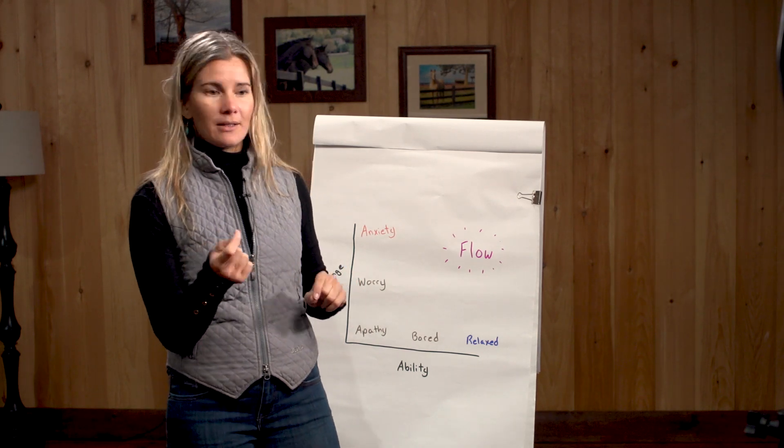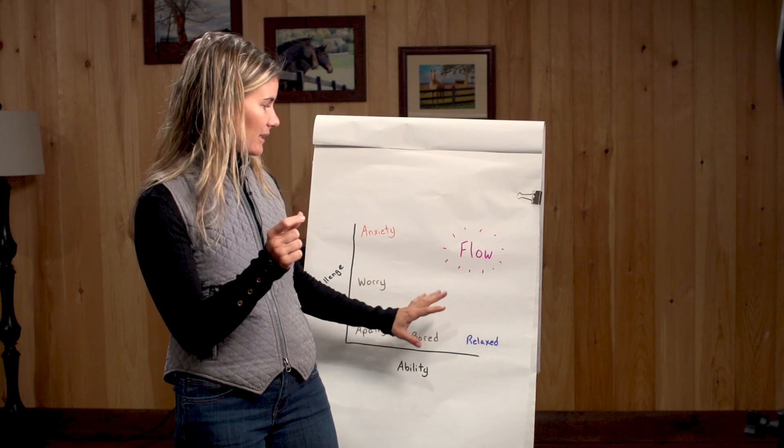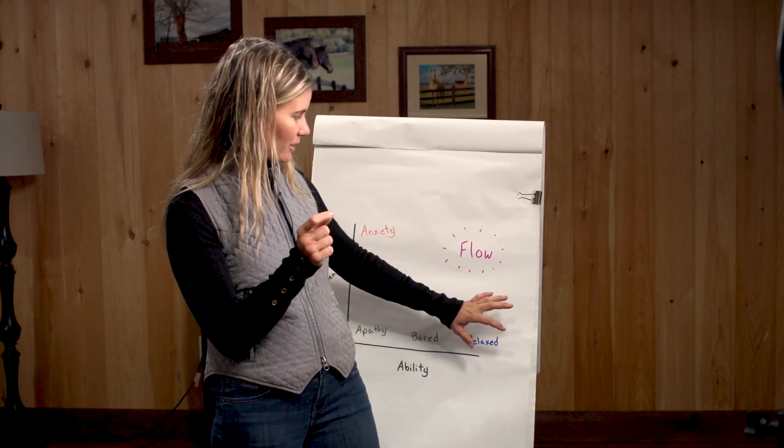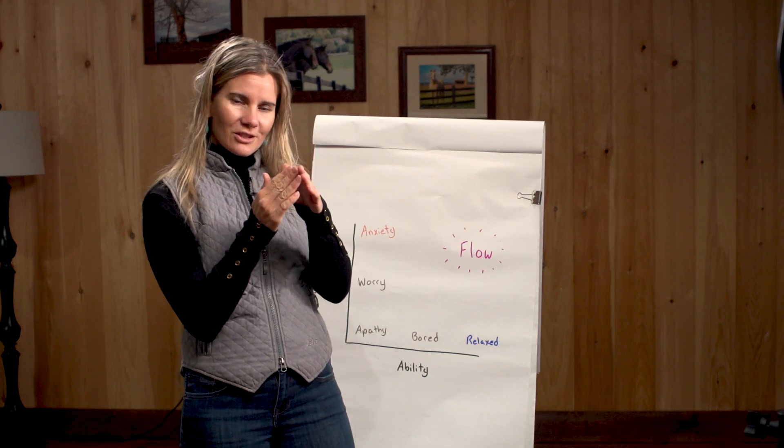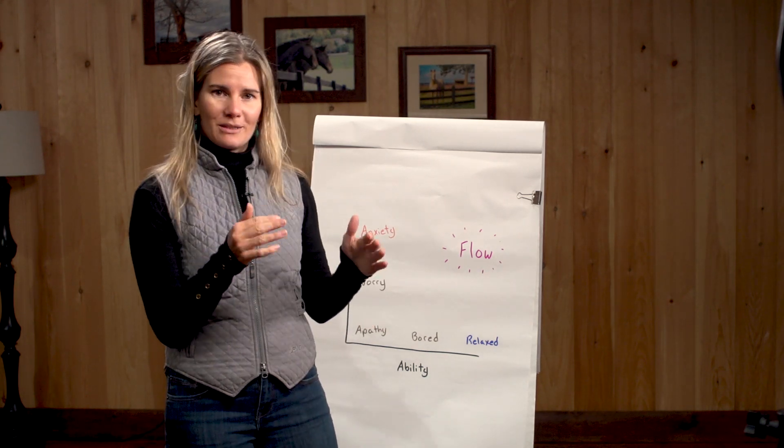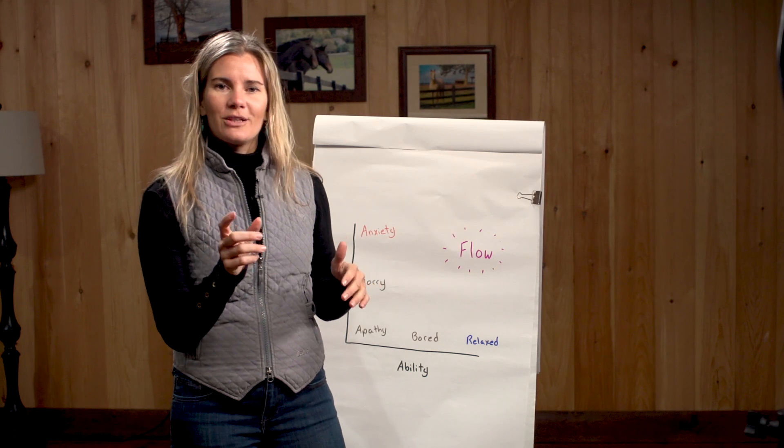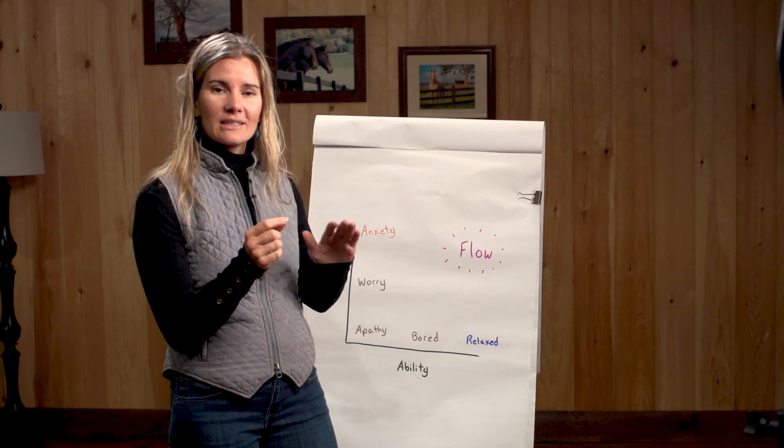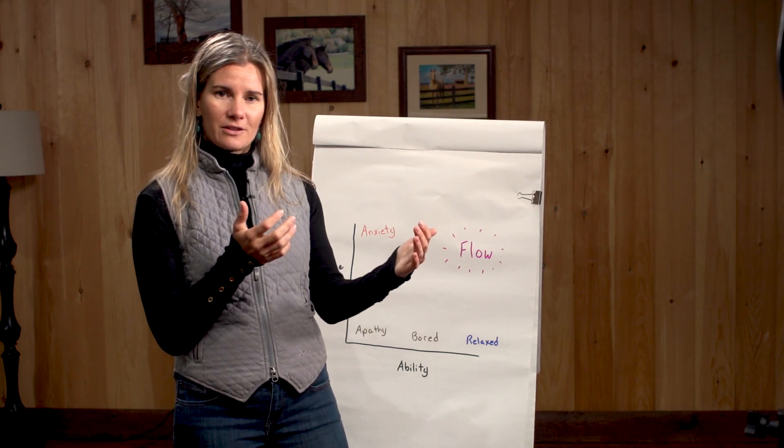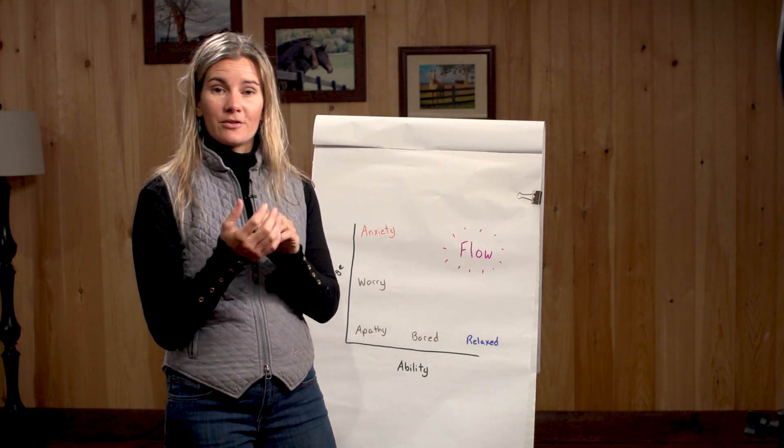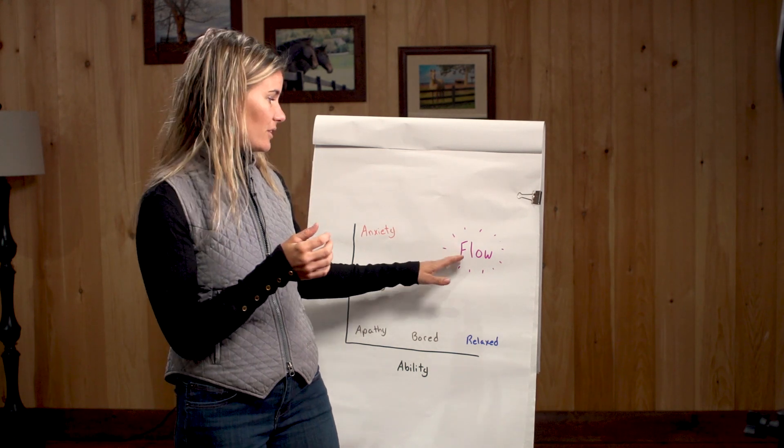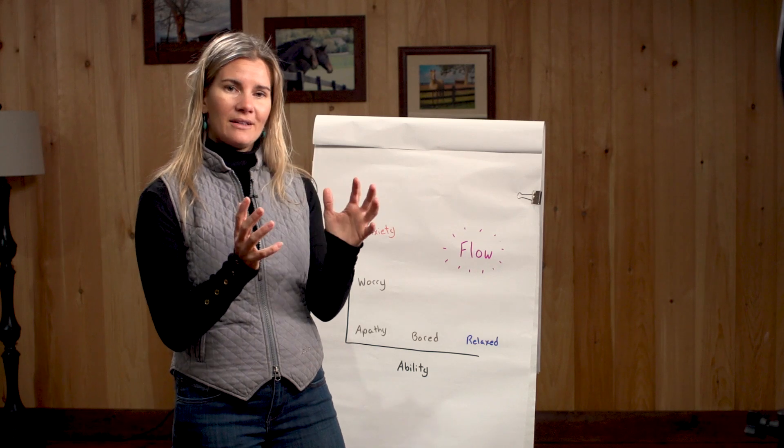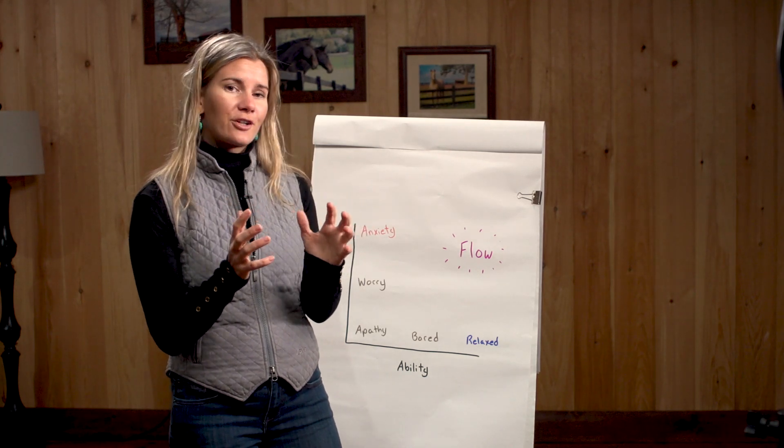And then in order to keep finding this state of flow, you're going to need to push yourself a little further. Maybe it's riding a different horse. Maybe it's starting to work on the canter. So this state where the challenge and where our abilities are, where they meet in just the right place to create this, is always a moving target. But I would really encourage you to think about where can you find this, and how can you use this to keep improving yourself as a rider. We've talked a little bit about comfort zone in some other videos. How can you also use this to think about how you can expand where your current skill set and your current comfort zone are?